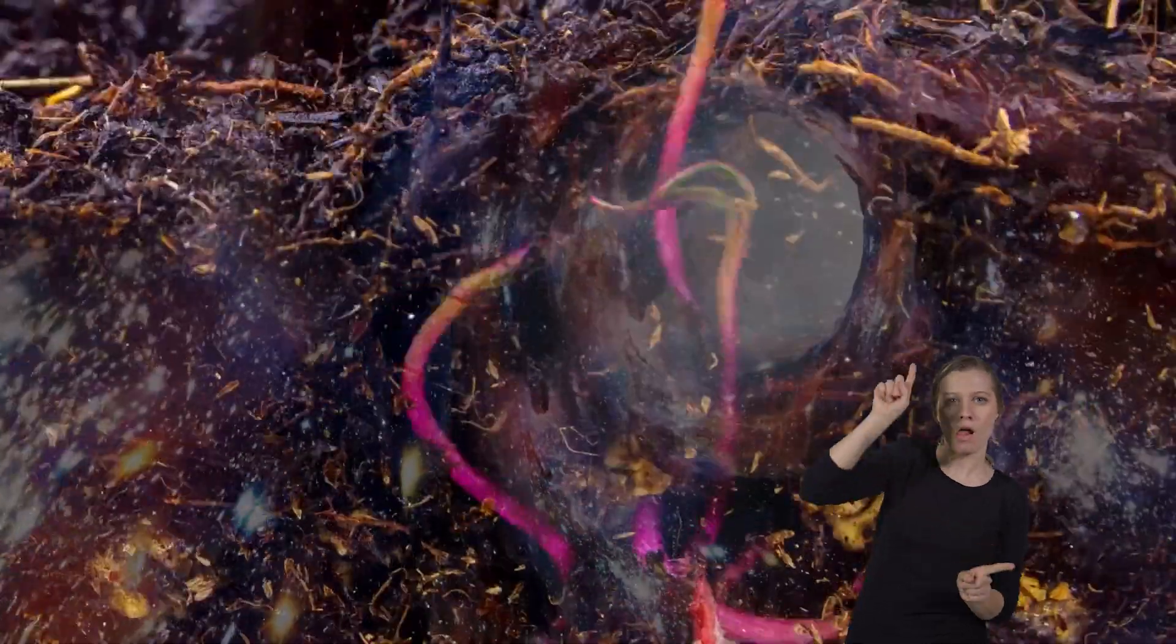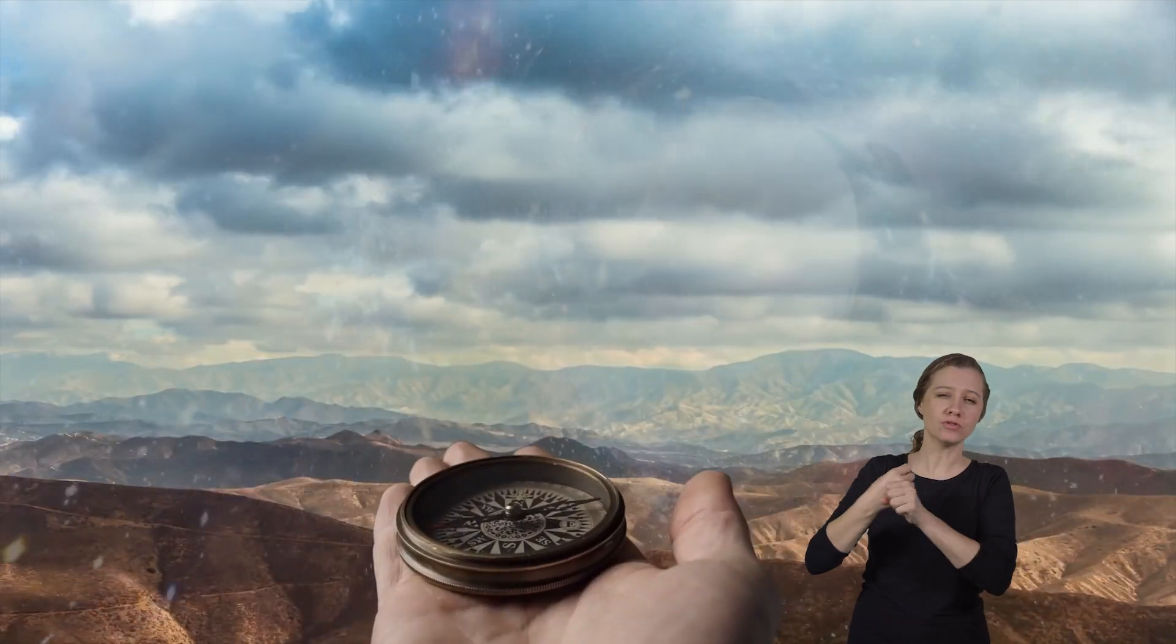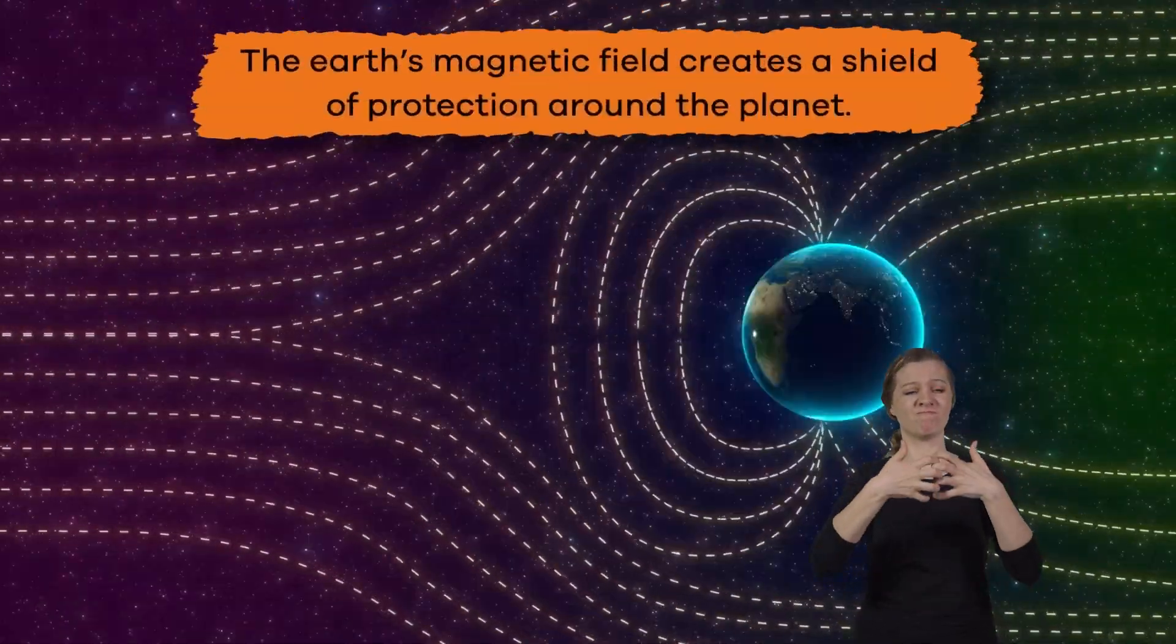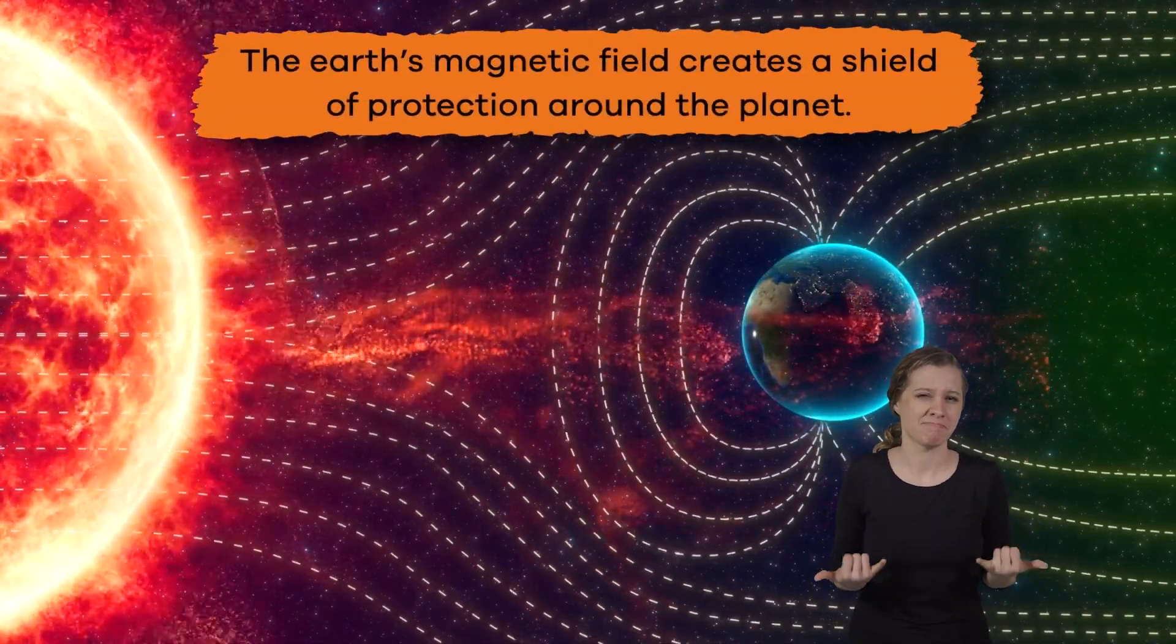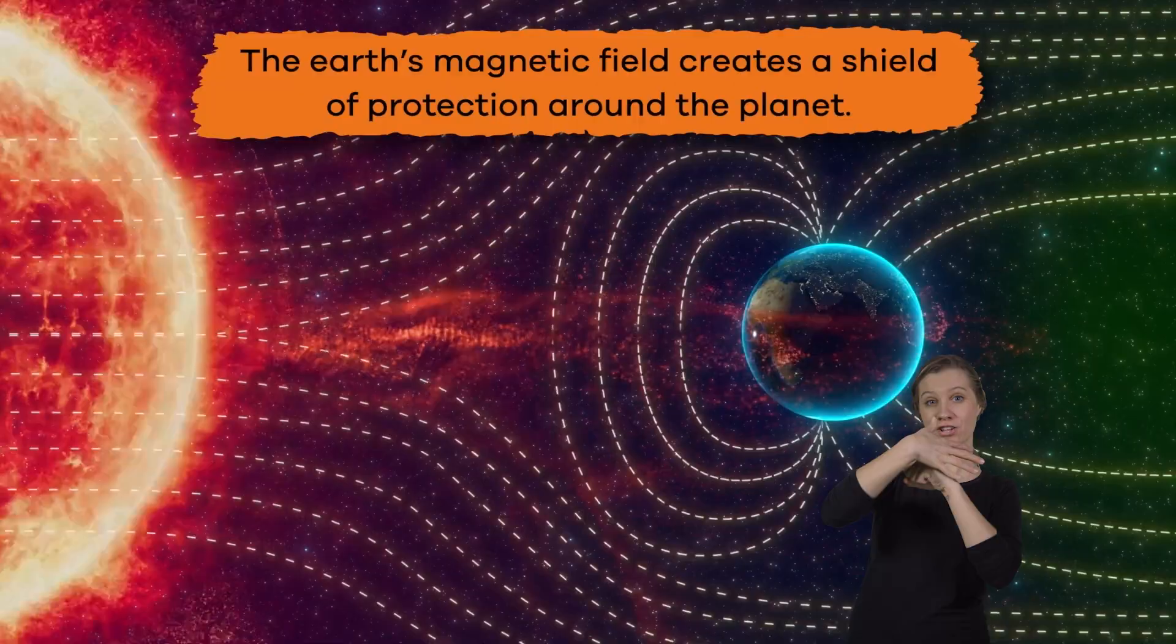So don't throw away your compasses just yet. The earth's magnetic field creates a shield of protection around the planet that blocks harmful space weather like solar wind and solar radiation.